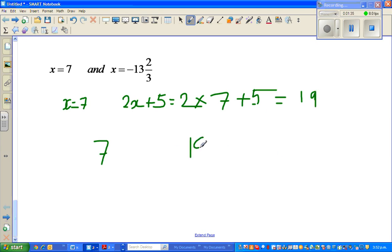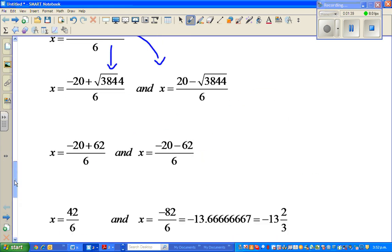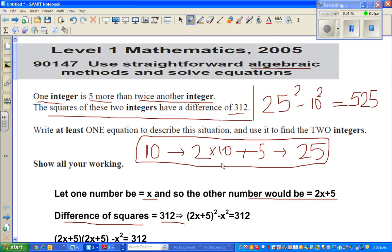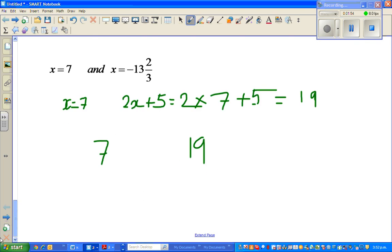So how will you check whether our answer is right? What does the question say? The difference of squares is 312. When you take the difference, the difference of the squares should give you 312. So does it work here?